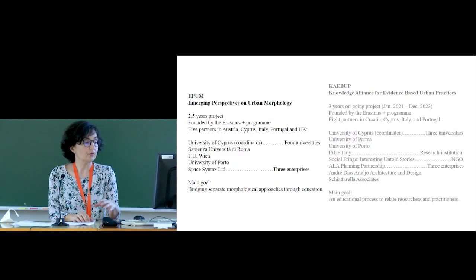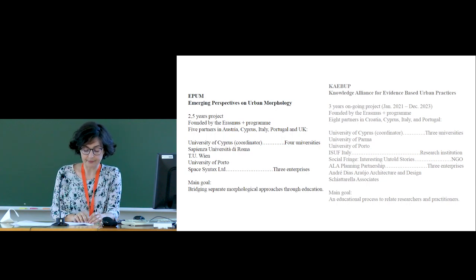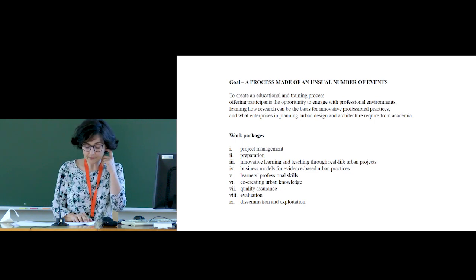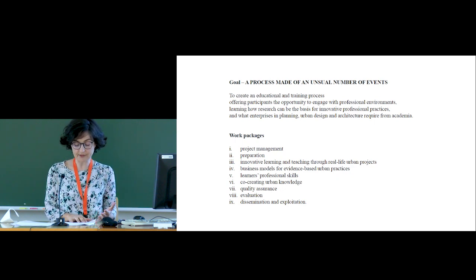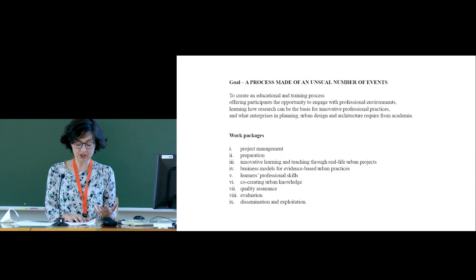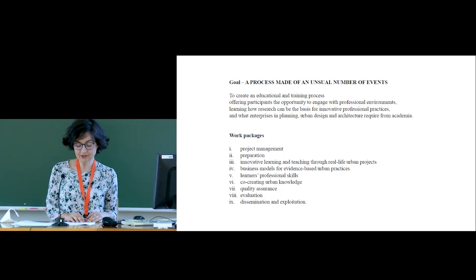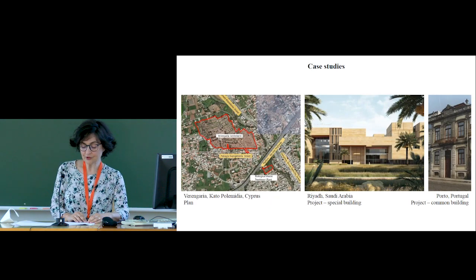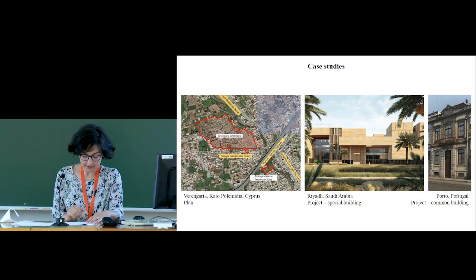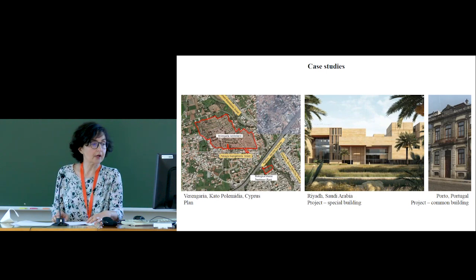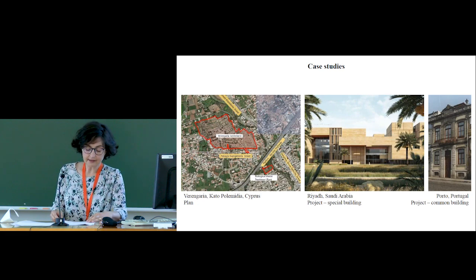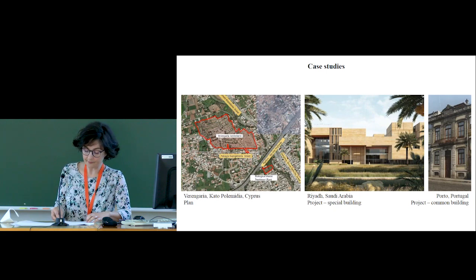Within CAIBAP, we try to create an educational and training process that offers participants the opportunity to engage with professional environments — learning how research can be the basis for innovative planning practice, and, on the other way around, understanding what these enterprises require from academia. To do so, we use three real projects being developed by the enterprise partners: one master plan in Cyprus near Limassol — the Varangaria master plan — and two buildings: one residential building in Porto and a special building in Riyadh, Saudi Arabia, for a ministry.